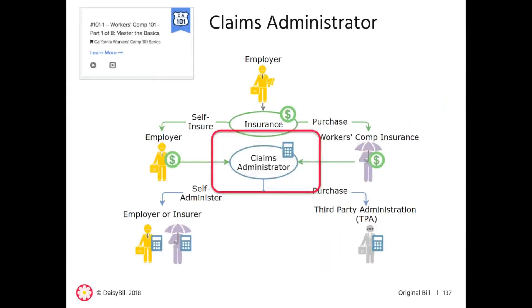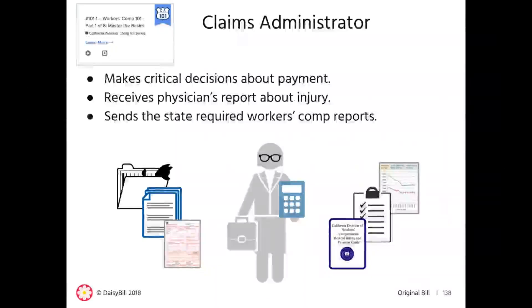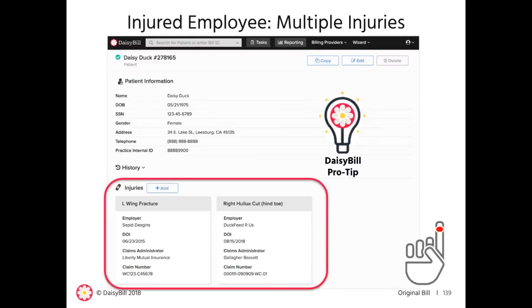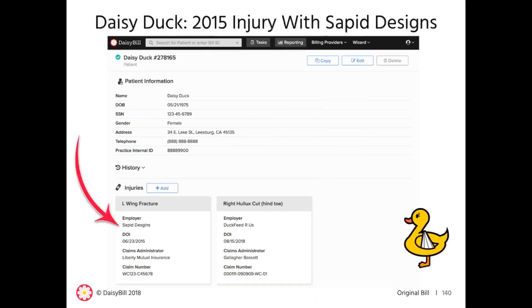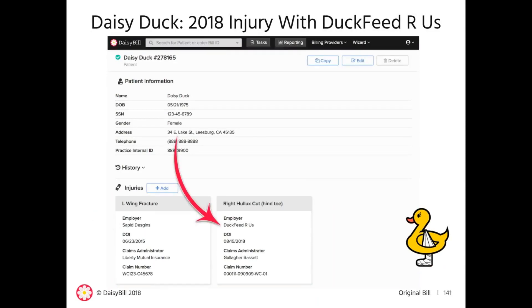It is important to get this information from the claims administrator so that your information matches the information in the payer system. Here's an important billing tip: if the employee sustains multiple work injuries that are unrelated, you must separately register each new injury. Each injury requires separate bills with different injury information. For example, Daisy Duck sustained an injury in 2015 while employed by SAPED Designs — bills for that injury are sent to Liberty Mutual. Then she sustained a separate injury in 2018 while employed by Duck Feed RS — bills for that injury are sent to Gallagher Bassett.